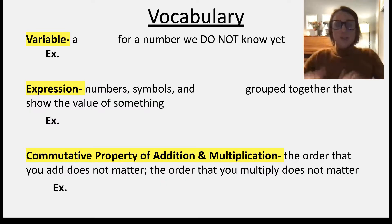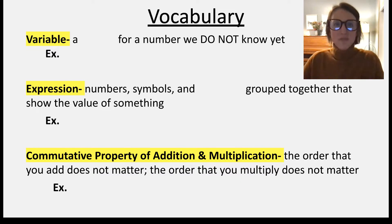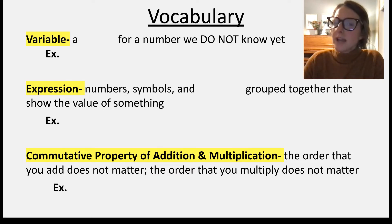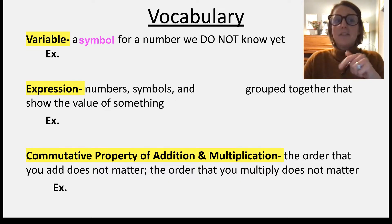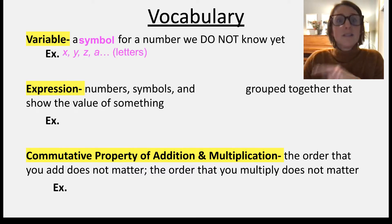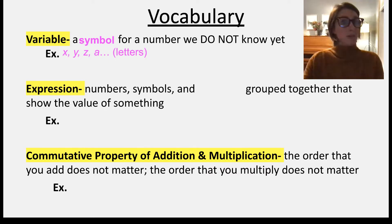Let's refresh our mind on what variables are and what expressions are. This is not in your notes — just follow along with me and talk out loud. See if you can fill in the blanks. Variable: a blank for a number we do not know yet. A symbol. A variable is a symbol that represents a number we don't know yet. In math, you use letters to represent variables. In elementary school, you might've used empty boxes or smiley faces.